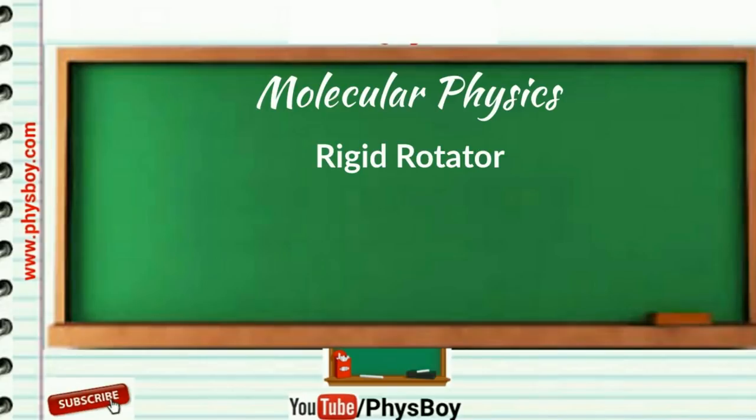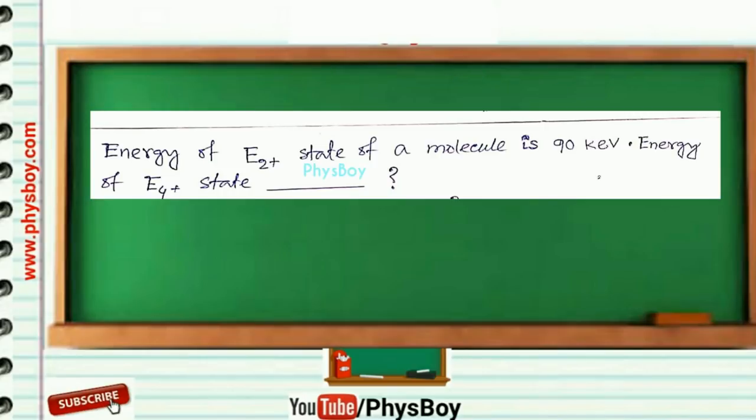The question was something like this: the energy of E2+ state of a molecule is 90 keV, then what is the energy of E4 state of that molecule?